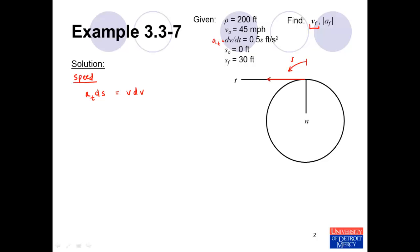In order to solve for the velocity, we need to solve an integral. We're told the initial position is zero and the final position is 30 feet, but we'll solve it symbolically and leave the upper limit as a variable s. The initial velocity is 45 miles per hour. Most things given have length units of feet and time units of seconds, so to make everything consistent, we'll convert the initial velocity from 45 miles per hour into feet per second, which works out to be 66 feet per second.